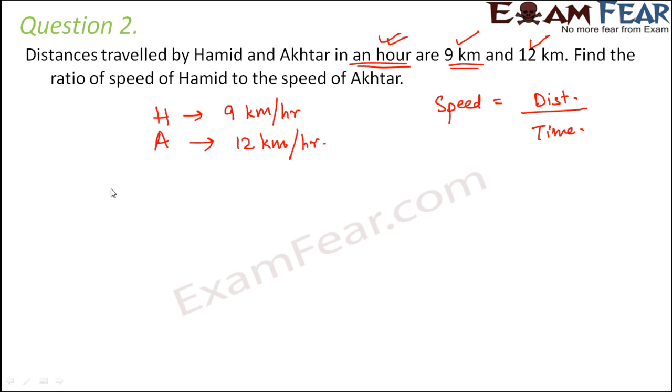So we have to find out the ratio of speed of Hamid to the speed of Akhtar. So this would be equal to 9 by 12. Both are in the same unit. So that's not a problem. Now again here, do you think they have any common factor? Yes, they do have common factors. Let's quickly write. Factors for 9 are 1, 3, 9.